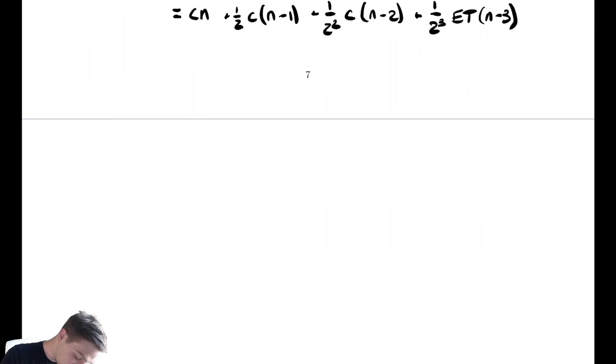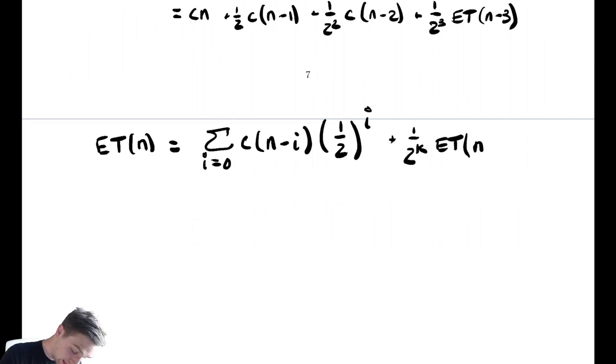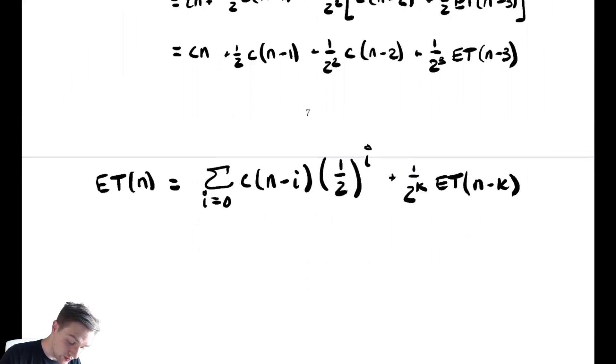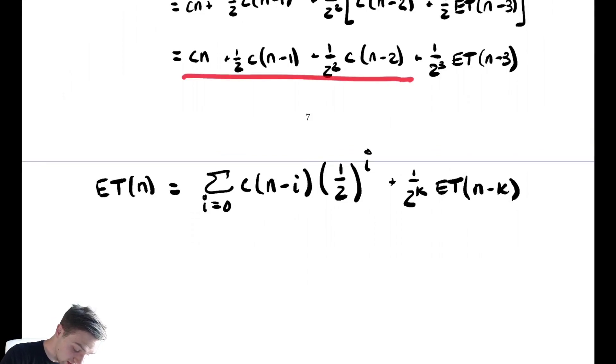And similarly for all of the terms above, so my first set of terms here looks like we're adding up terms that look like c times (n-i) times 1 over 2 to the i. And our last term looks like 1 over 2 to the k ET(n-k). And just to make sure we can finalize this, the power of 2 in the last term of my leading terms is always lagged by 1 compared to the term in the E, so this is a k-1 there.